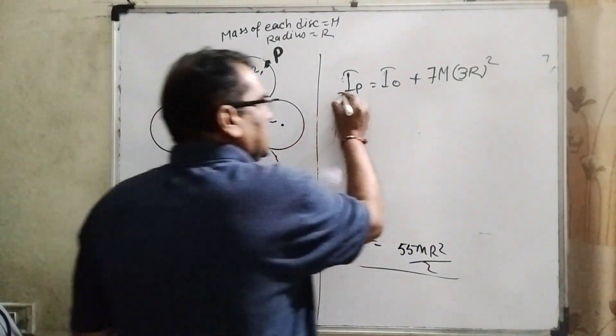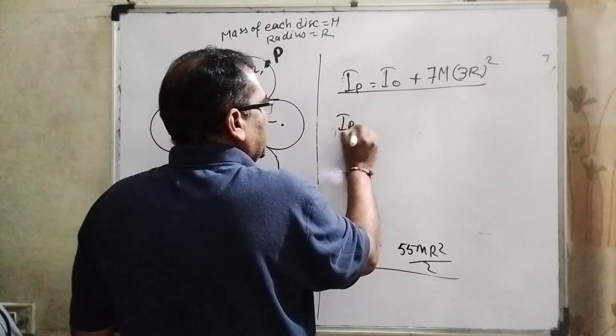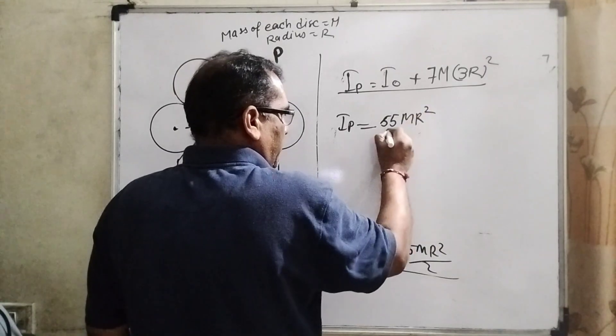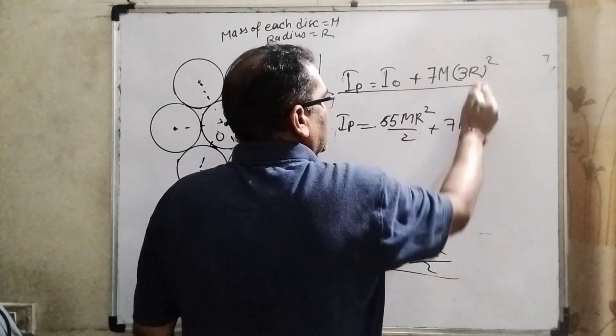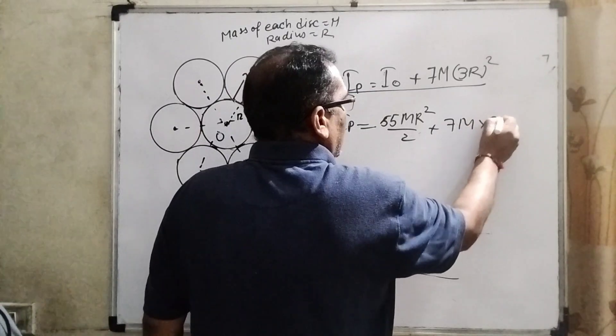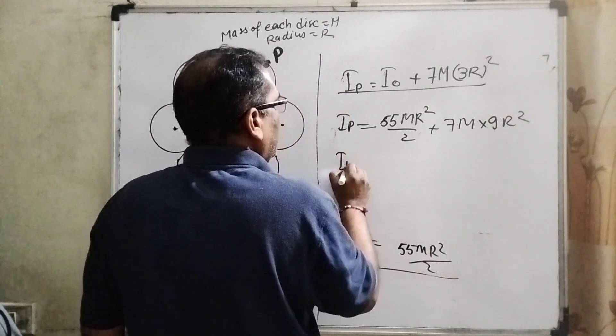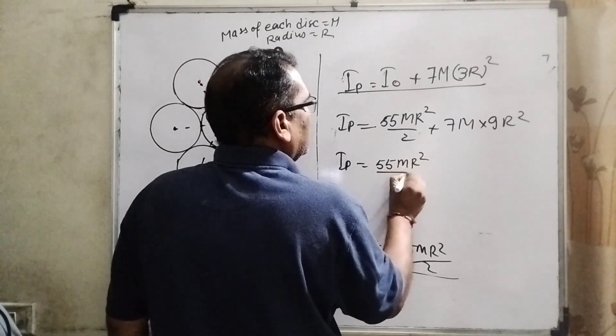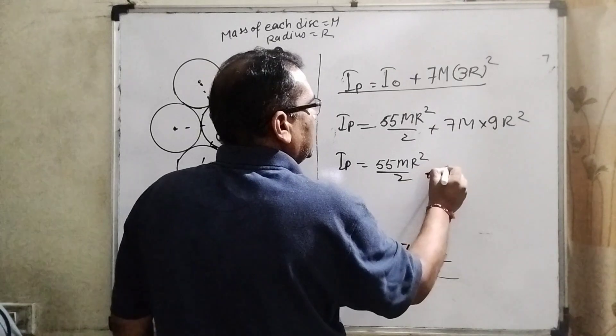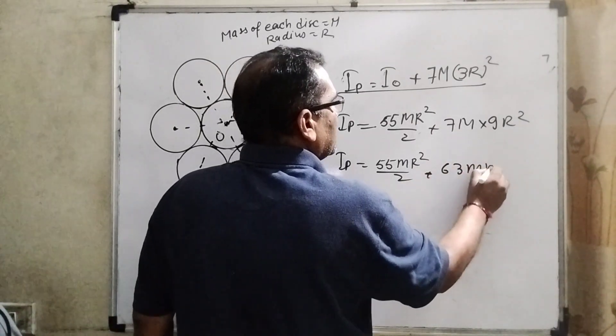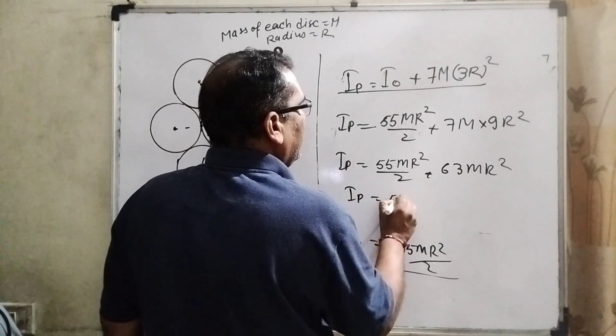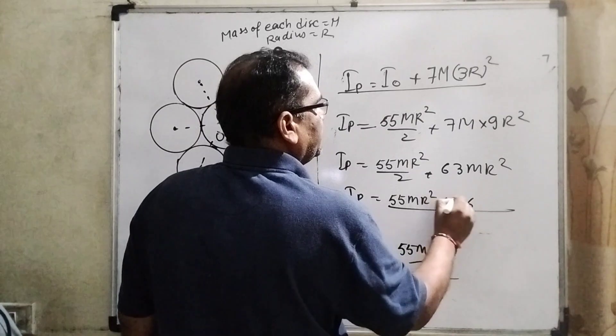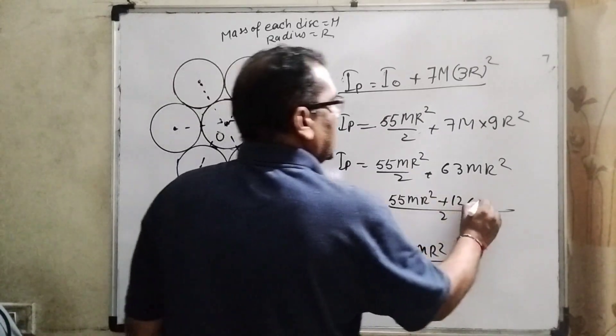And total mass - how much? M times 7, so 7M. Okay, so we are using parallel axis theorem here. Now substitute the value of I₀: 55MR²/2 plus 7M times (3R)² - 3 squared means 9R². So Iₚ = 55MR²/2 plus 7 times 9 equals 63MR². Then Iₚ = 55MR² - taking LCM of 2 - plus 126